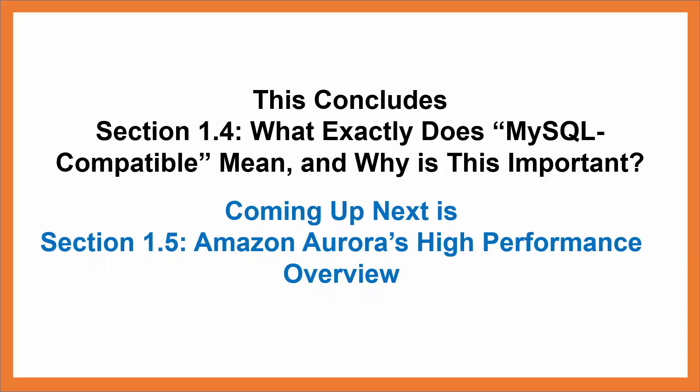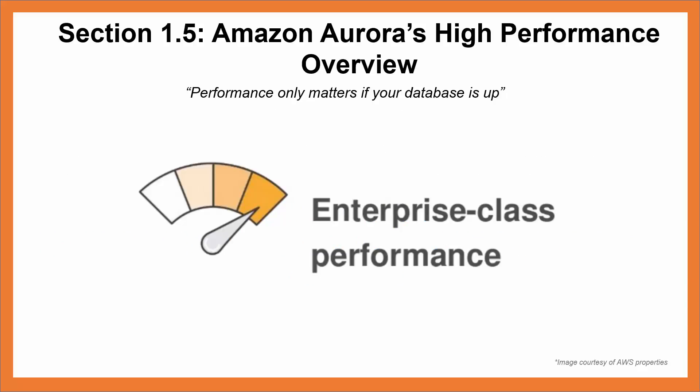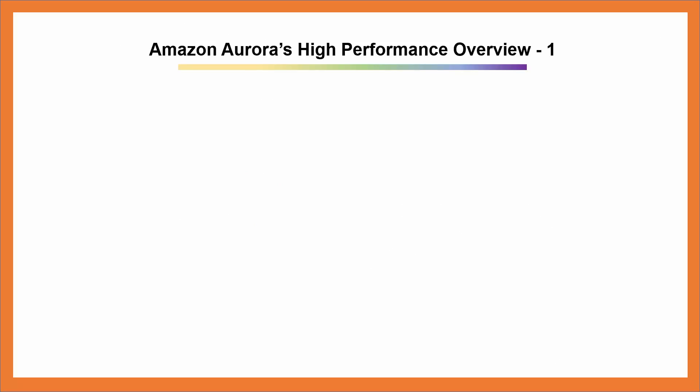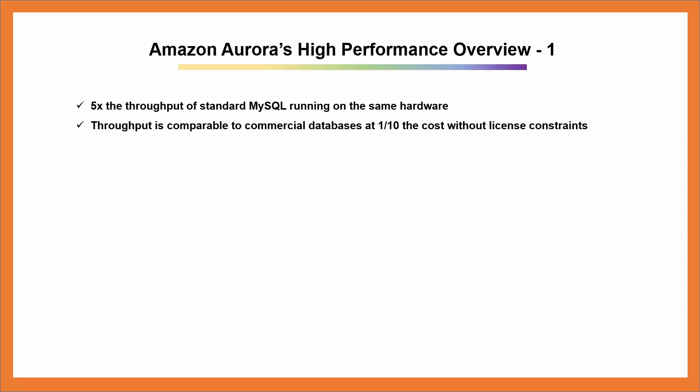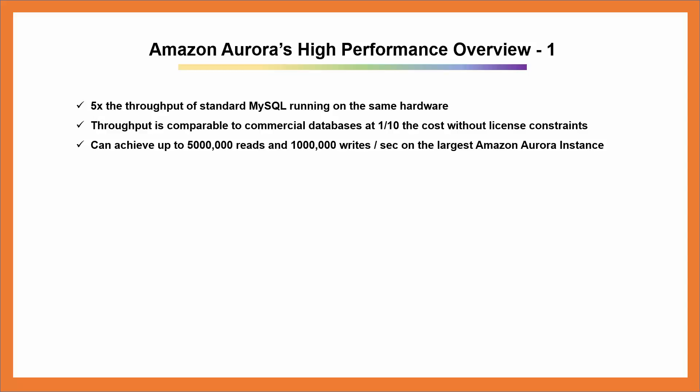Coming up next is section 1.5, Amazon Aurora's High Performance Overview. Performance only matters if your database is up. Amazon Aurora has five times the throughput of standard MySQL running on the same hardware. Throughput is comparable to enterprise commercial databases at one-tenth the cost without license constraints. Amazon Aurora can achieve up to 500,000 reads and 100,000 writes per second on the largest instance, and you can perform 6 million inserts per minute and 30 million selects per minute.